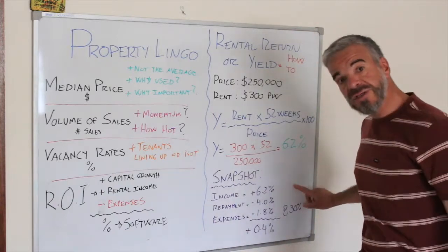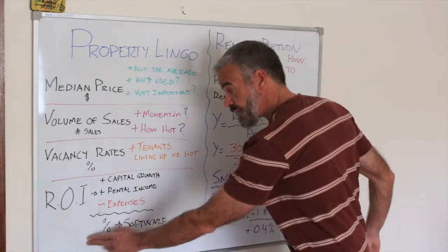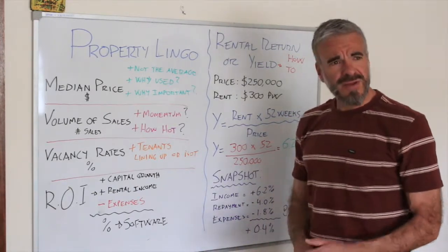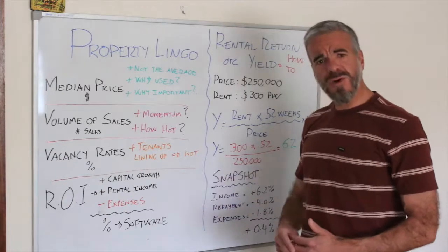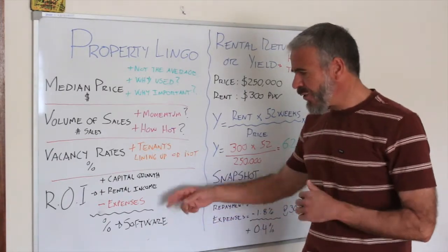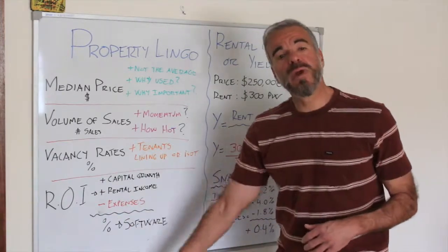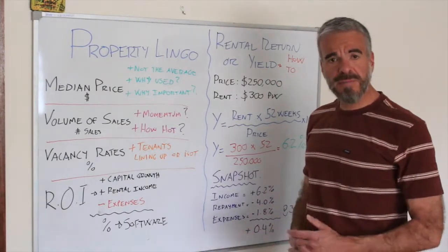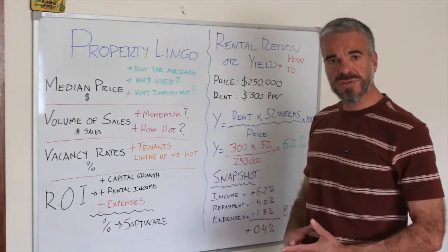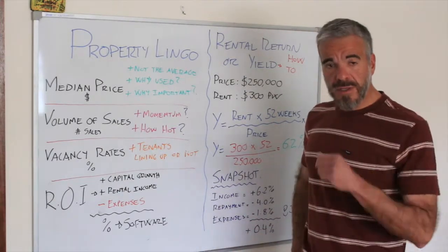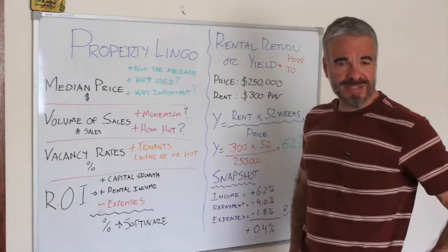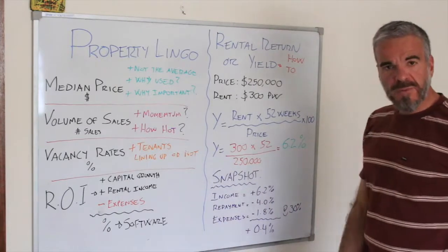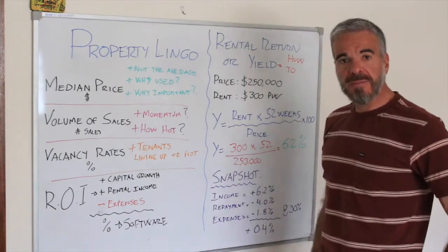Going to return on investment quickly — this is only a snapshot. Return on investment takes into consideration your income, depreciation of fixtures and fittings, capital growth, and all that. I'd recommend having software on your computer — these days it's very affordable, various worksheets and software you can purchase for $150 or less. I no longer use one myself; I'm a rule-of-thumb, back-of-the-envelope calculation type of guy.